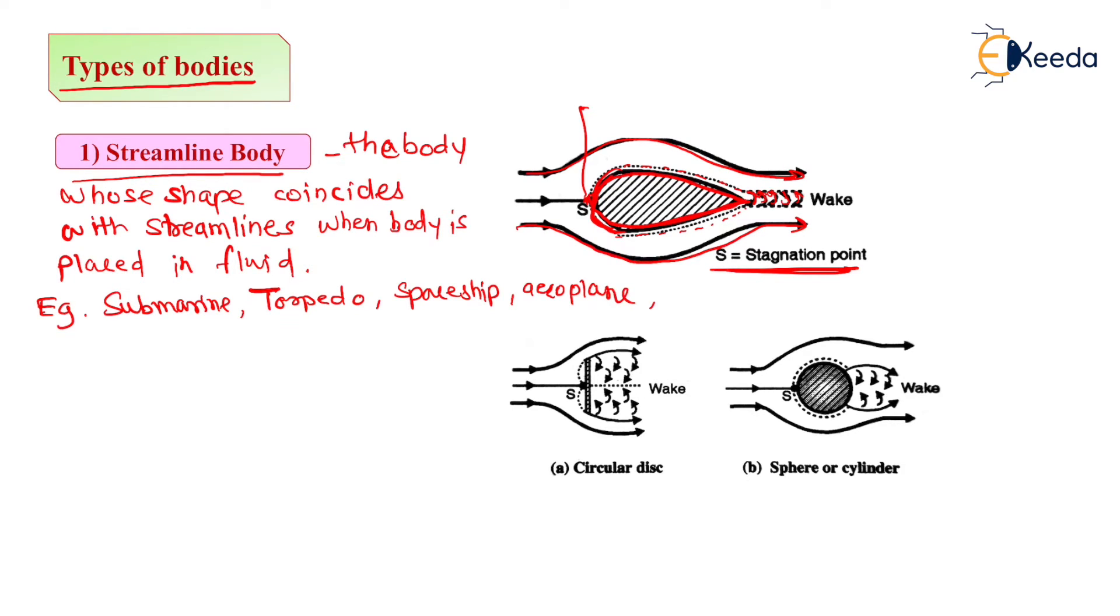Now let us start with second type, that is bluff body. We can define bluff body as the body whose shape does not coincide with streamlines.